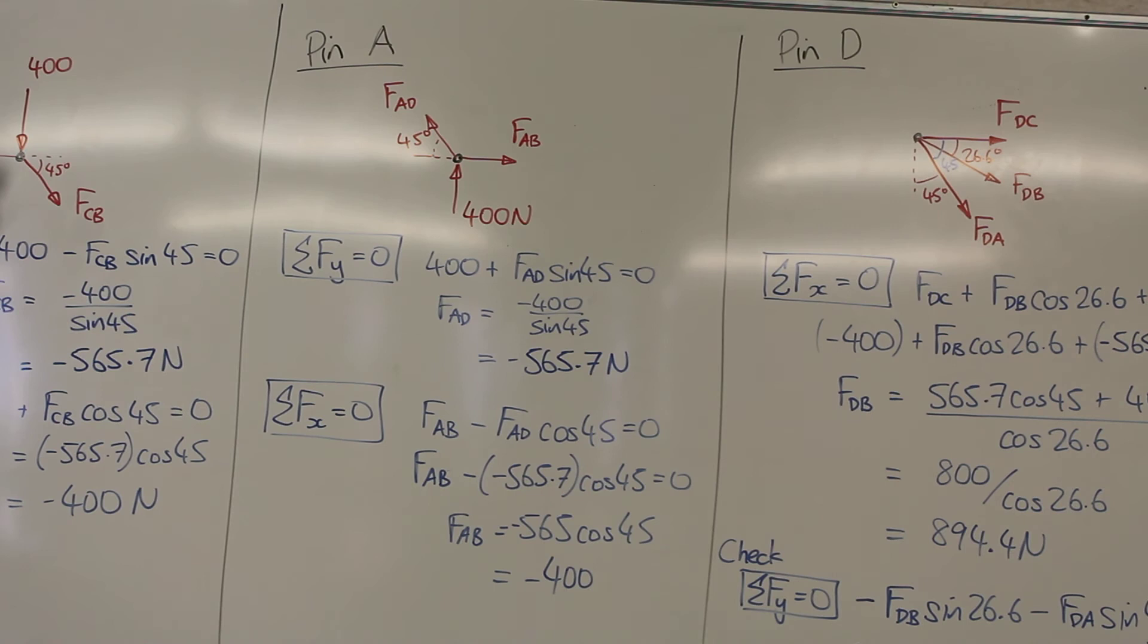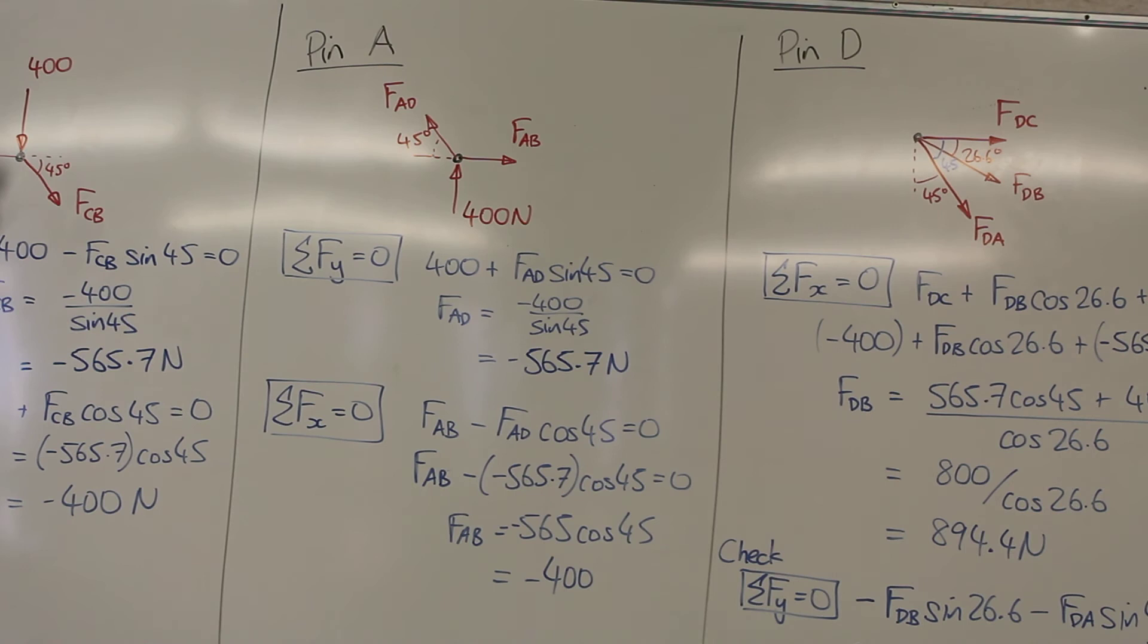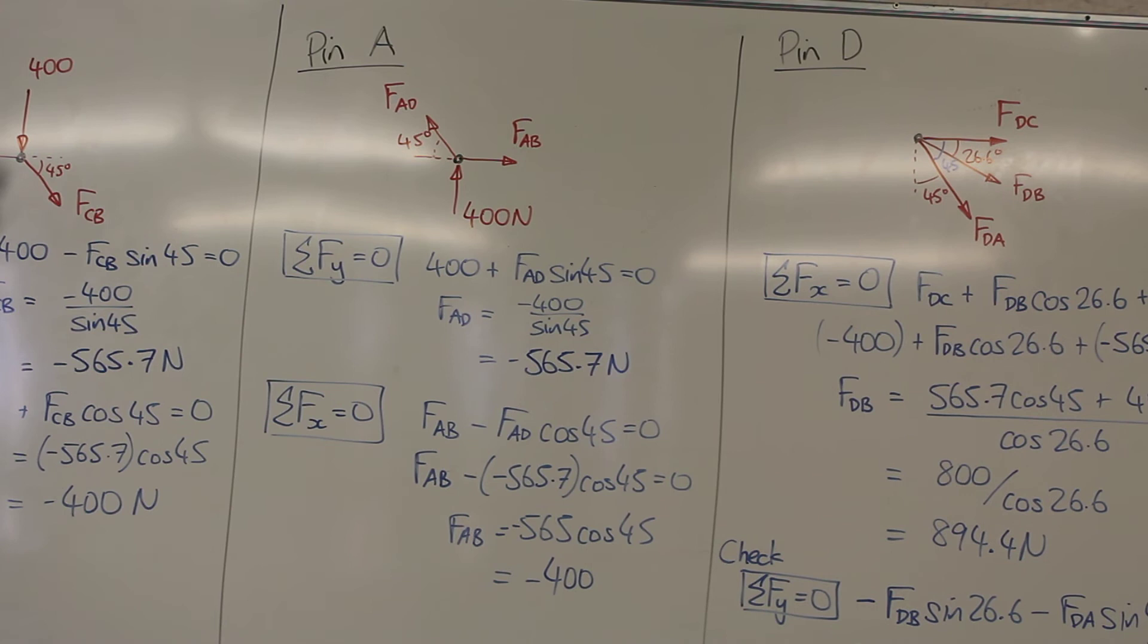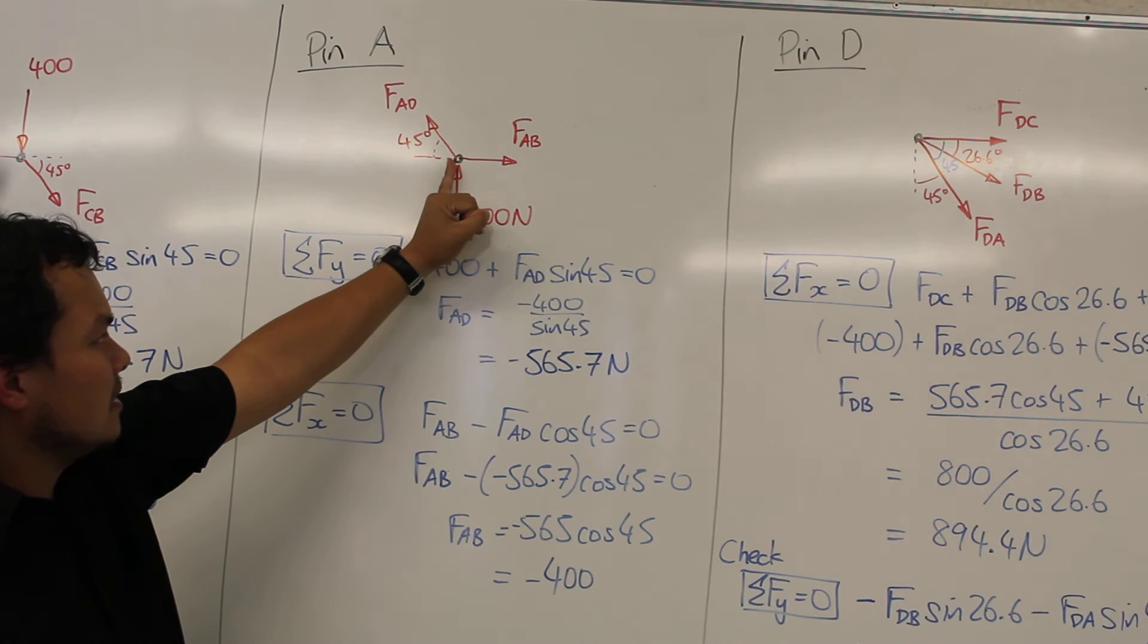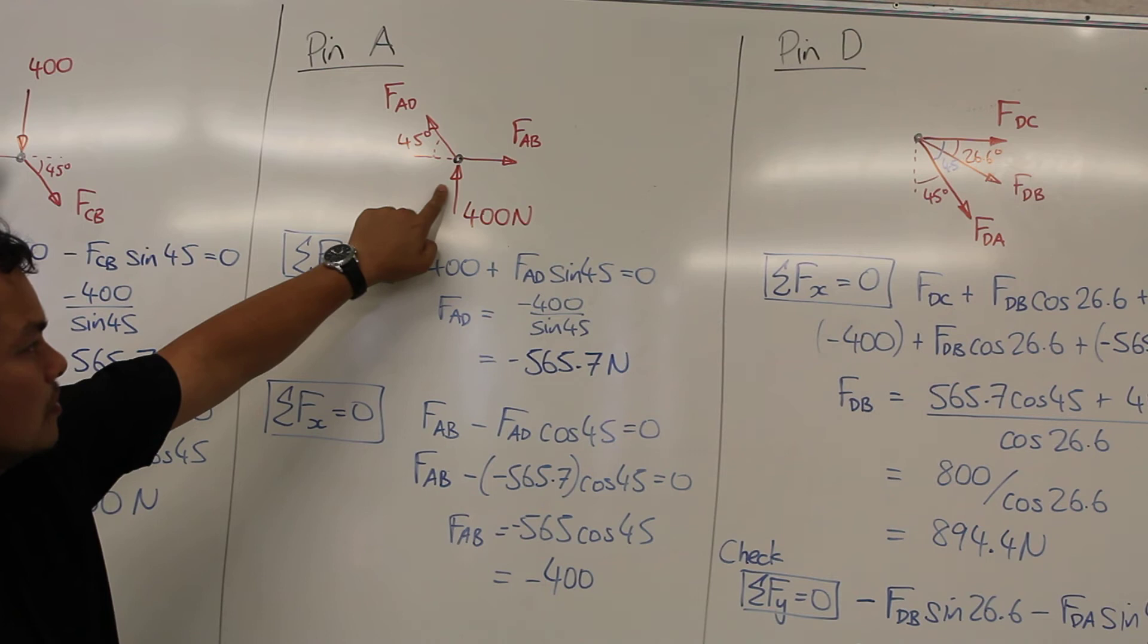So this is for pin A. For pin A, we've drawn a free body diagram, and we go through a similar analysis. We've got Fad going up on an angle of 45 degrees, 400 newtons acting up, and Fab going towards the right. So this was from our reaction force at the bottom that we calculated previously.